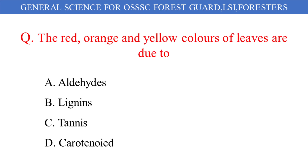The red, orange and yellow colors of leaves are due to: A. Aldehydes, B. Lignans, C. Tannins, D. Carotenoids. And the correct answer is option D: Carotenoids.